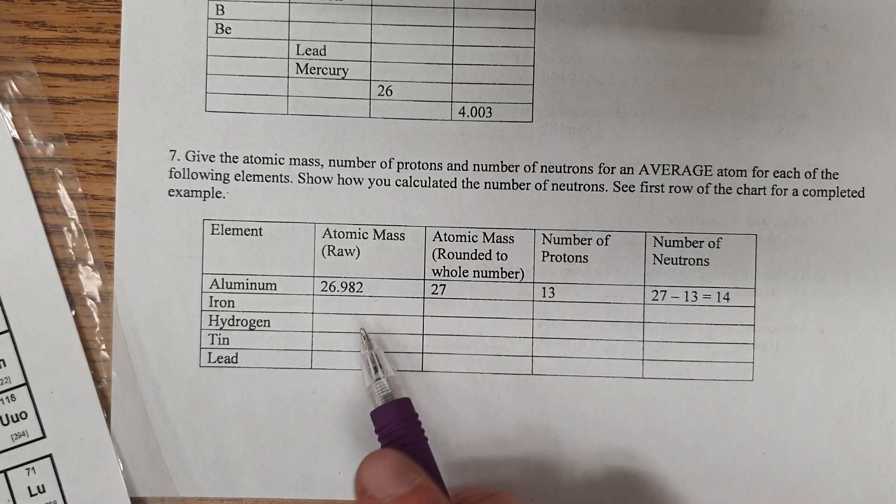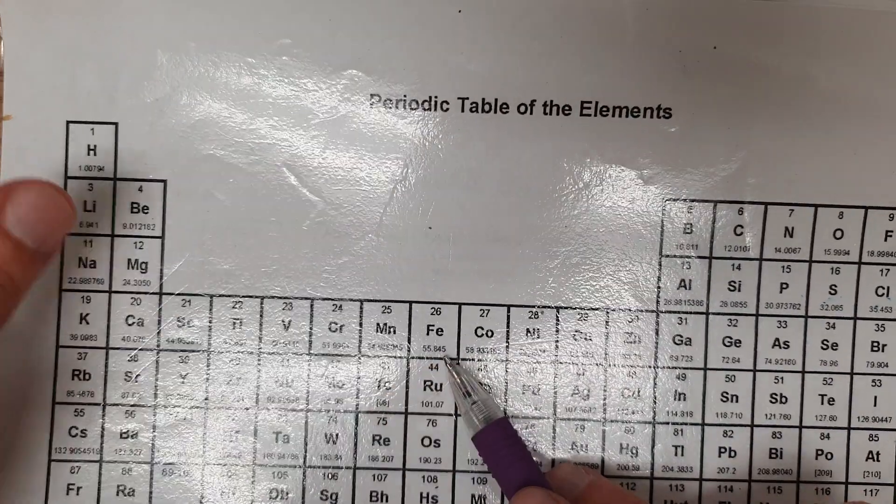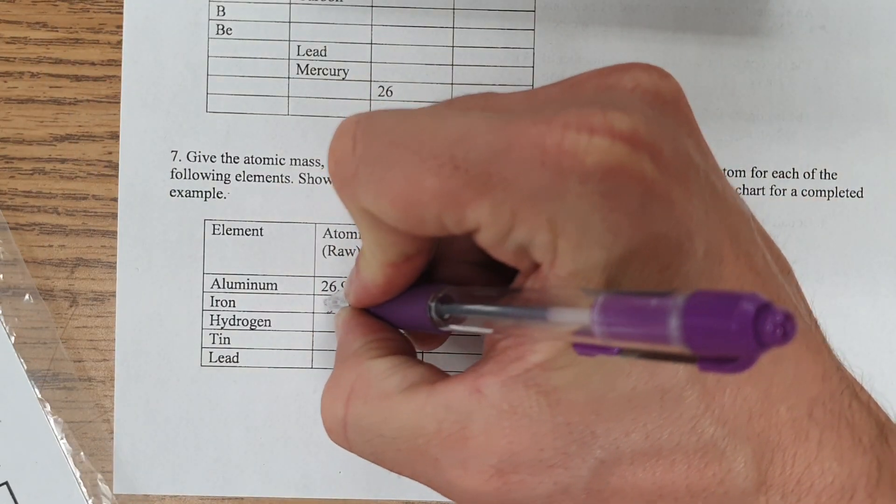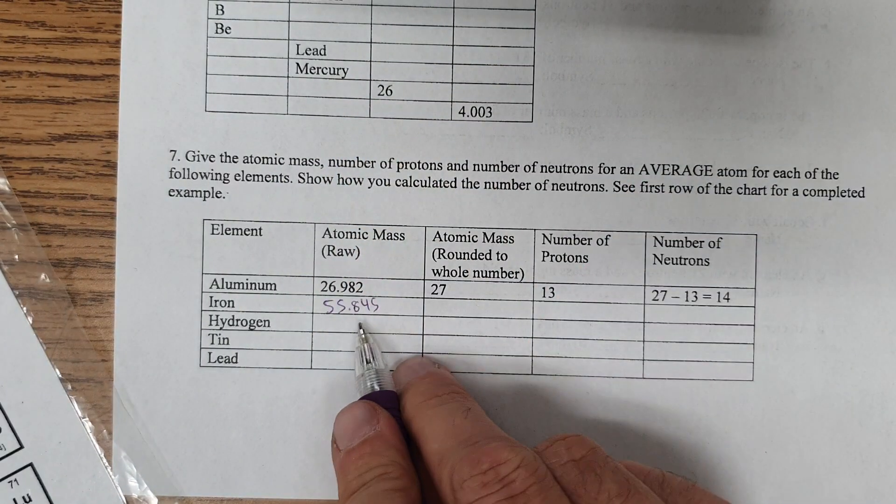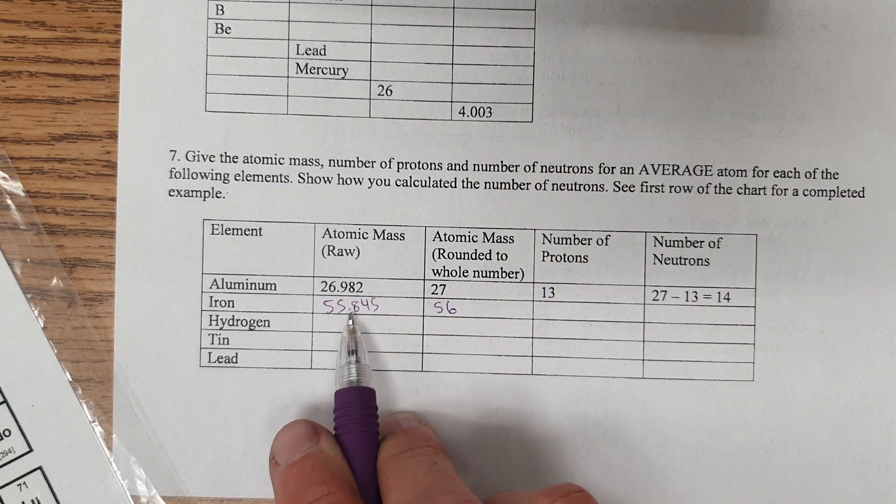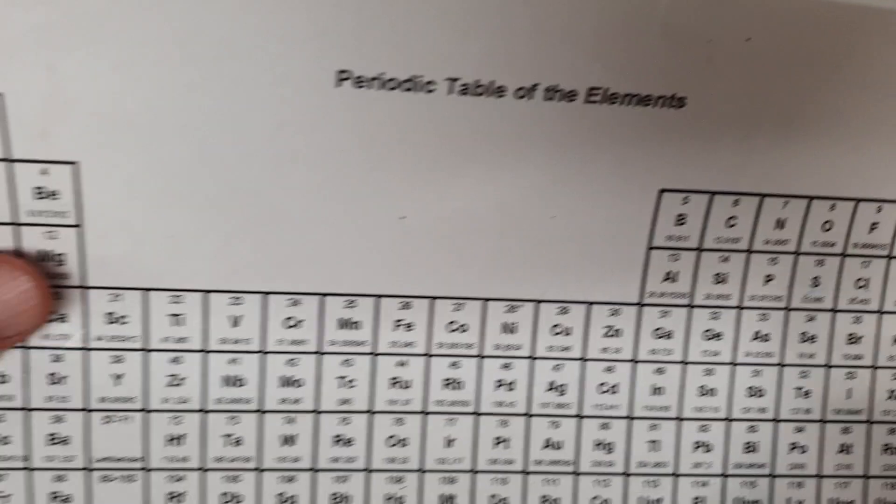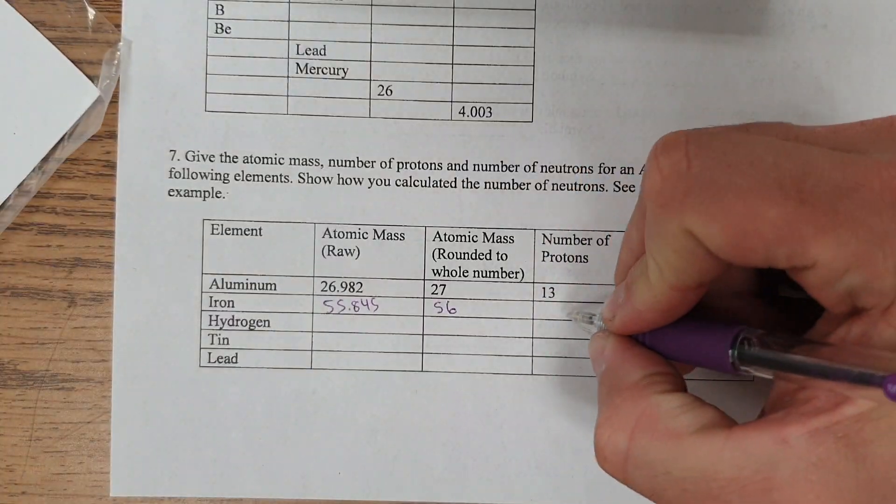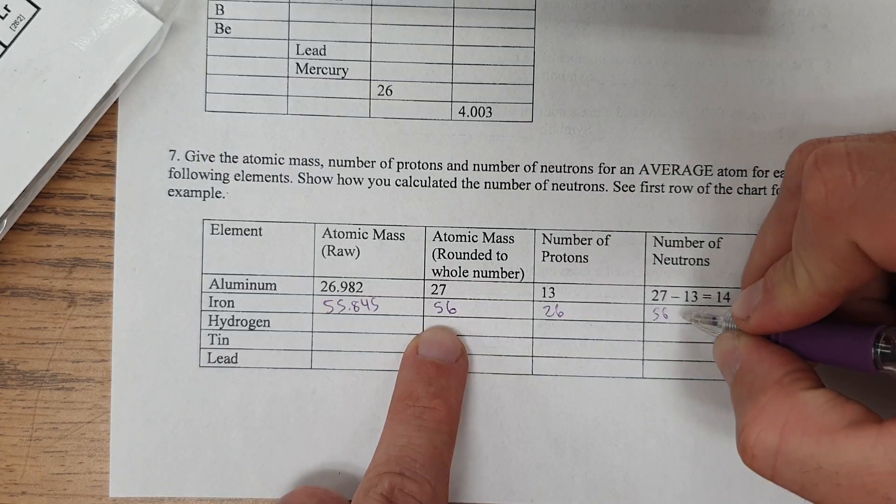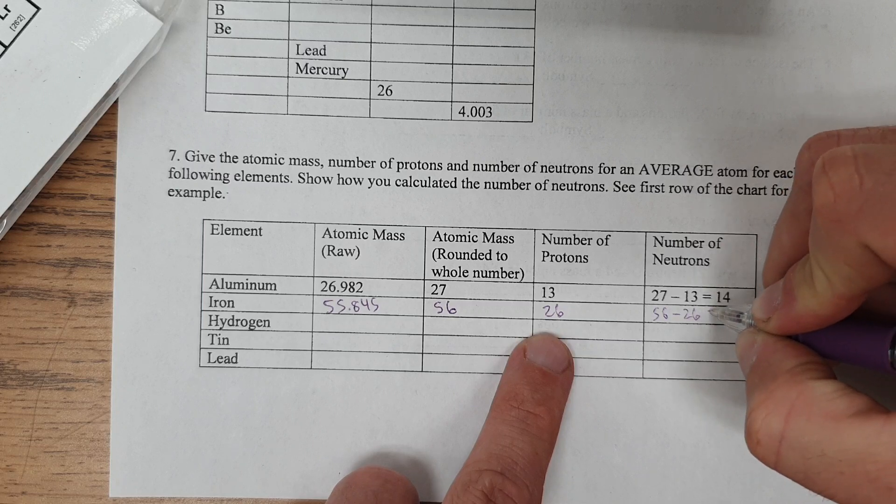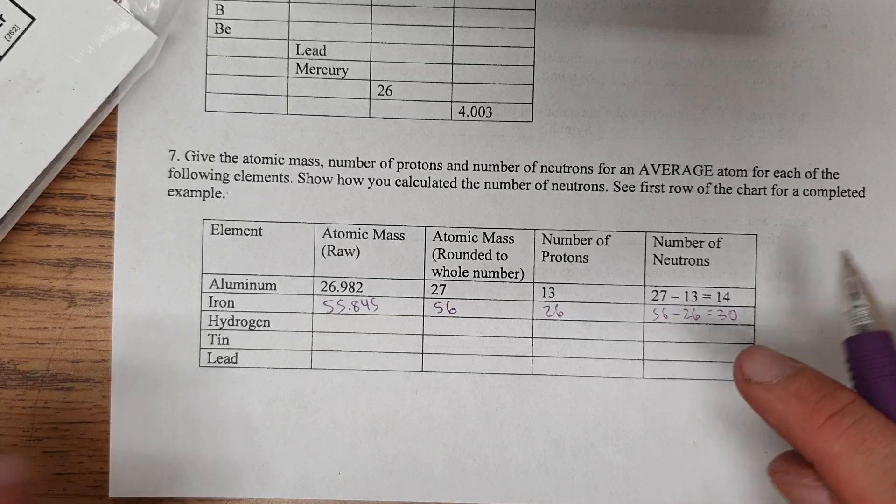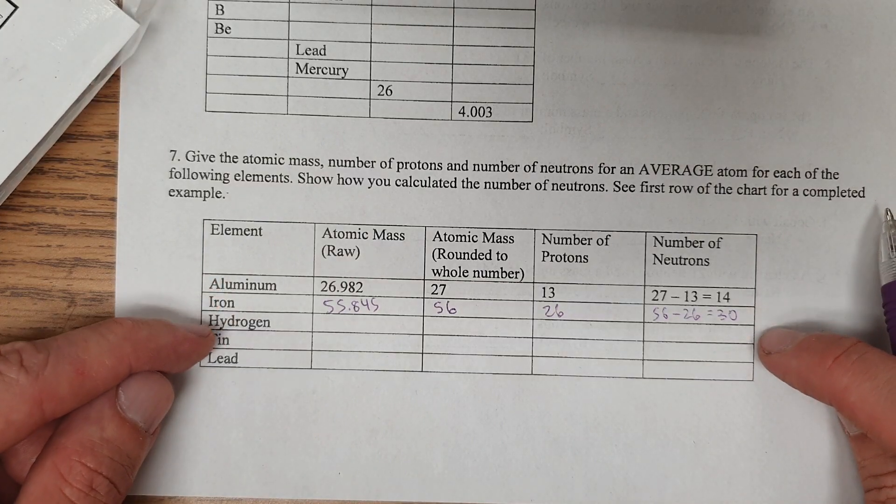An example for iron. Again, your periodic table might have a different number. Just use whatever yours has. But this particular periodic table says 55.845. We're going to round that to 56, because it's next to 5 or above, so it goes rounded up. And then number of protons, I look at iron. That's 26 protons. So I'm going to take 56, the atomic mass, minus the number of protons, is 30. And that's the number of neutrons. And you're going to follow that same pattern for all the rest of it as well.